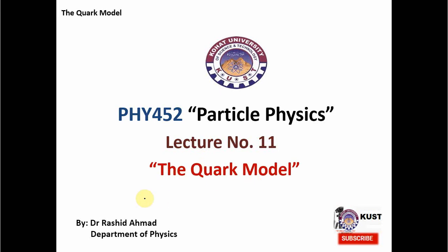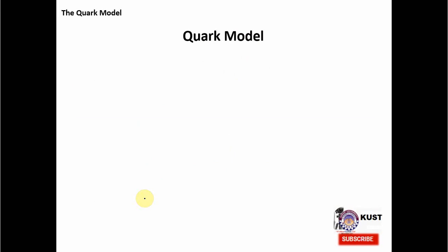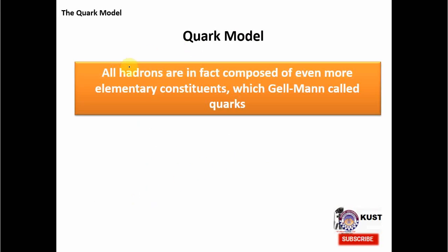As we know, the 8-fold way provided the first-ever classification scheme for the elementary particles. However, it was not clear why the 8-fold way is so successful. In order to provide a deeper understanding of the 8-fold way, Murray Gell-Mann suggested the quark model. The quark model is about hadrons, which are the only particles that feel the strong force, and they are in fact composed of even more elementary constituents, which Gell-Mann called quarks.